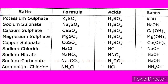Sodium chloride (NaCl) is prepared from hydrochloric acid and sodium hydroxide. Sodium nitrate (NaNO₃) is prepared from nitric acid and sodium hydroxide. Sodium carbonate (Na₂CO₃) is prepared from carbonic acid (H₂CO₃) and sodium hydroxide (NaOH). The last one is ammonium chloride (NH₄Cl), prepared from hydrochloric acid and ammonium hydroxide.